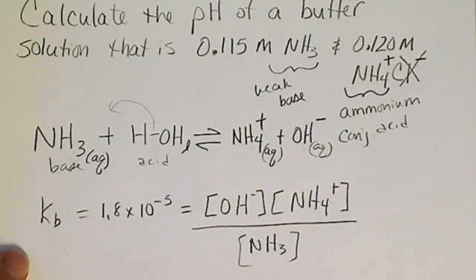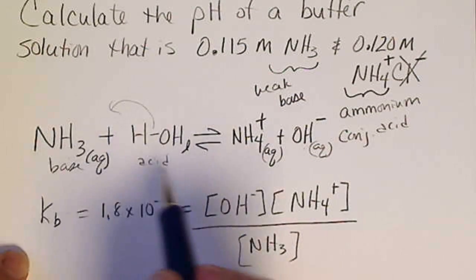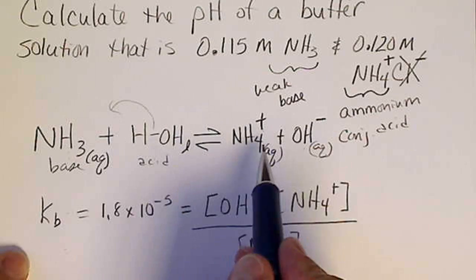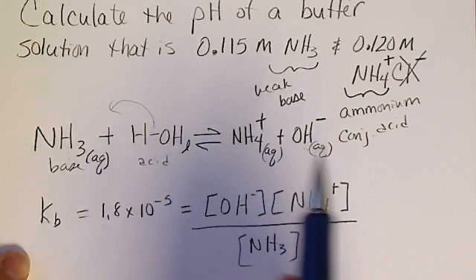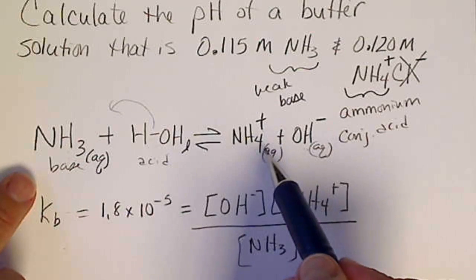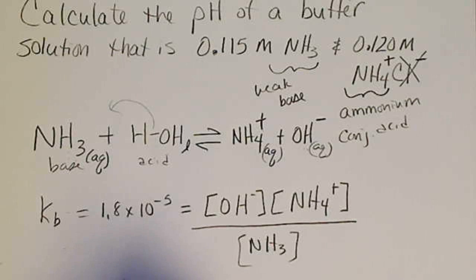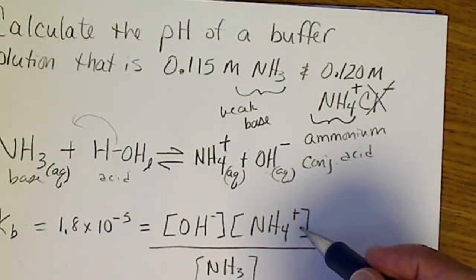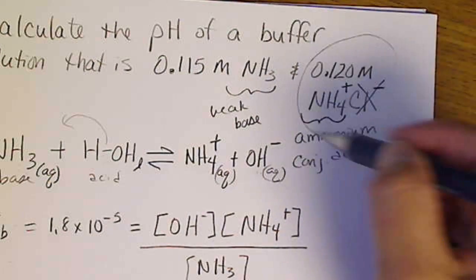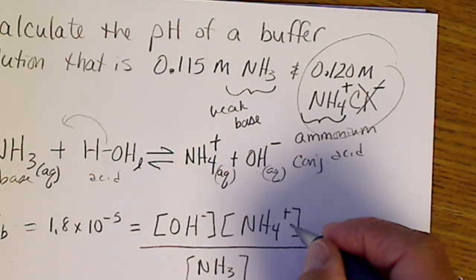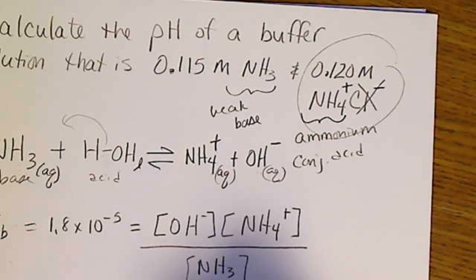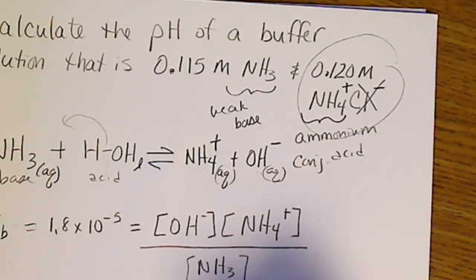And if I set up an equilibrium expression, we'd lose an amount of this, we'd gain X and we'd gain X. And the initial conditions would enter into that as well. So I'm going to ignore the small change and just solve for OH minus. So the NH4 concentration came from the salt.